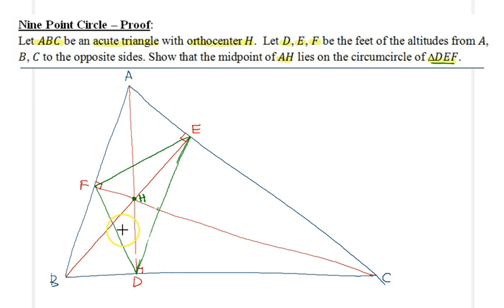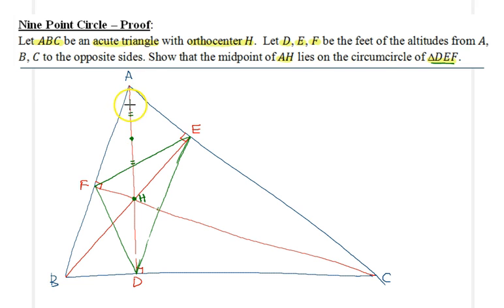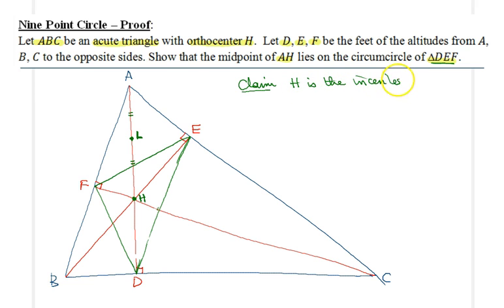The crux move in this problem is to establish that the midpoint of AH — call it L, somewhere here — lies on the circumcircle of triangle DEF. I want to make use of the incenter-excenter lemma. My claim is that H is the incenter of triangle DEF. H is the orthocenter of triangle ABC, but I claim it is the incenter of triangle DEF, and a simple angle chase will suffice.